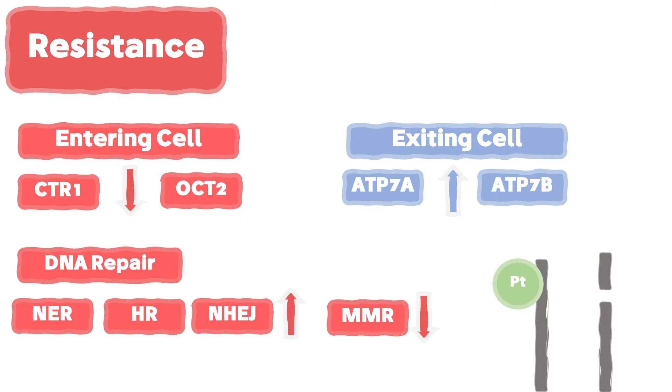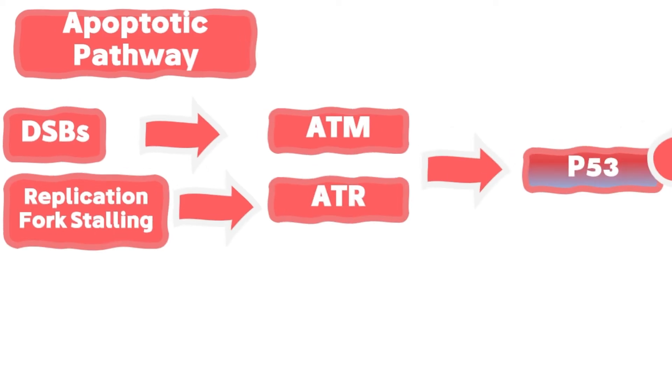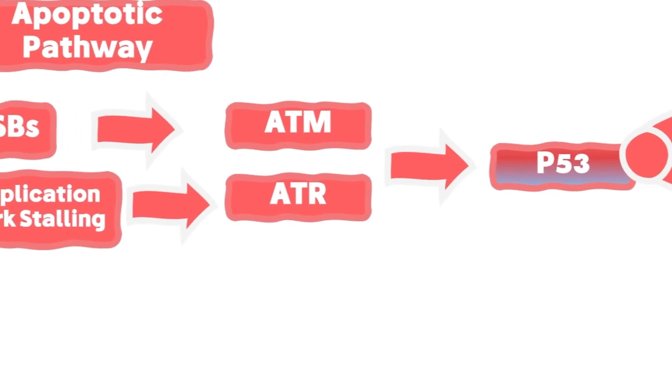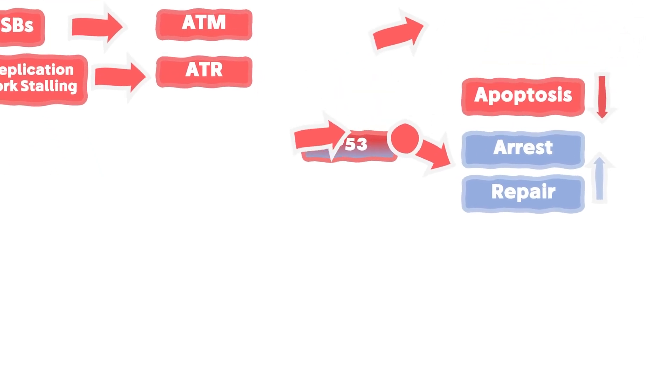The MMR system is ineffective in detecting the platinated nucleotides and instead it removes the opposite non-platinated nucleotides. Resistant cancer cells may have mutated or silenced one or multiple genes contributing to the apoptotic pathway activation, and they can over-activate the arrest and repair enzymes.